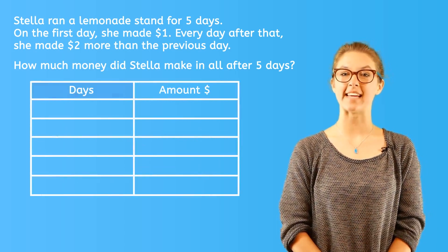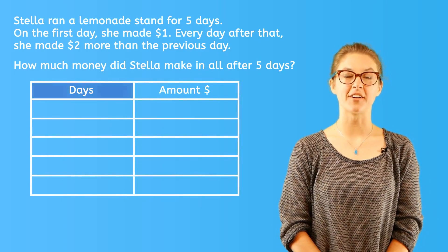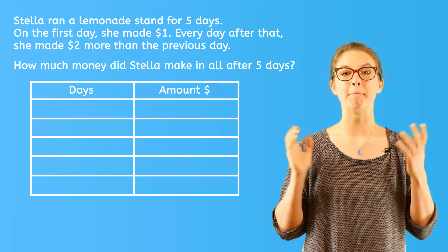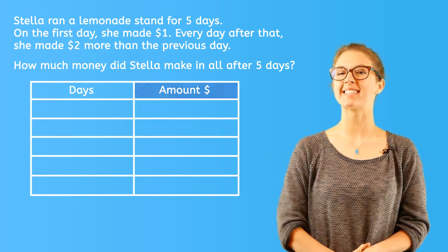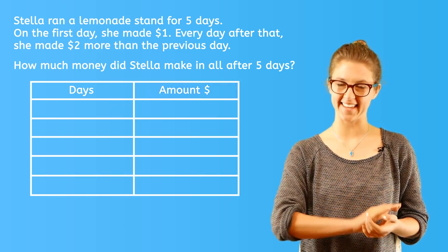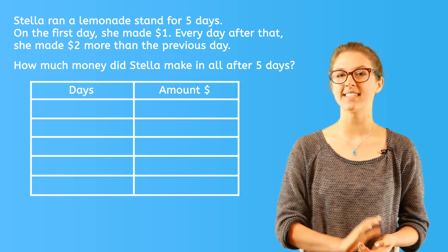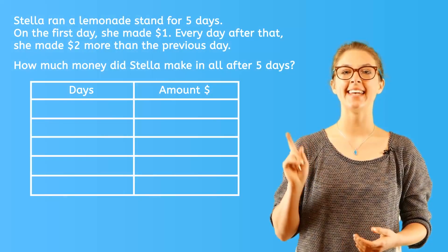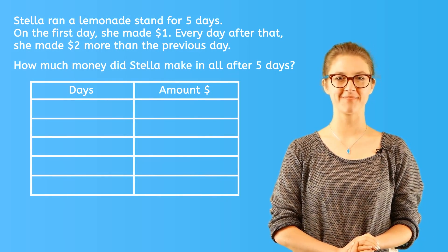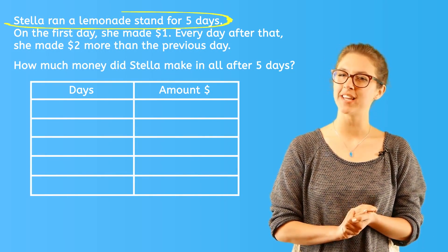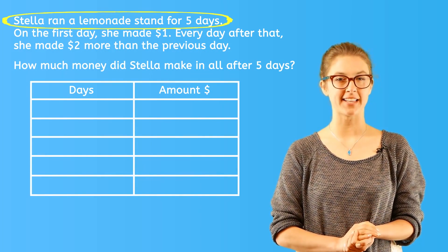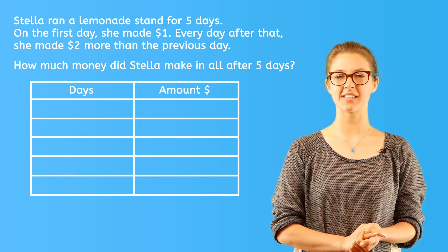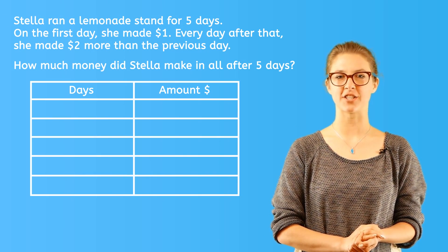A really neat way to solve this problem is to organize the information in a chart or a table. We need to track the number of days that Stella ran her lemonade stand. We also need to keep track of the amount of money that Stella made each and every day. We can organize this information in a chart just like this one. Now, let's fill in this chart. We know that Stella ran a lemonade stand for five days.